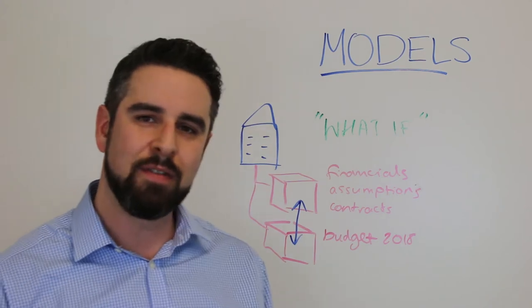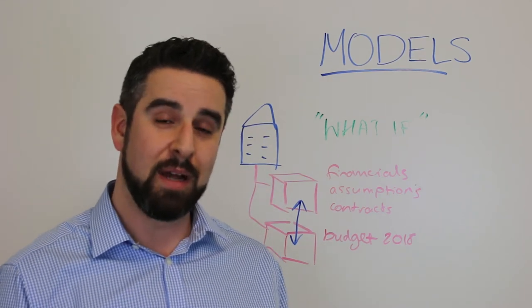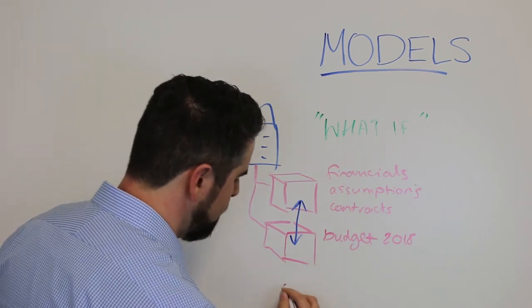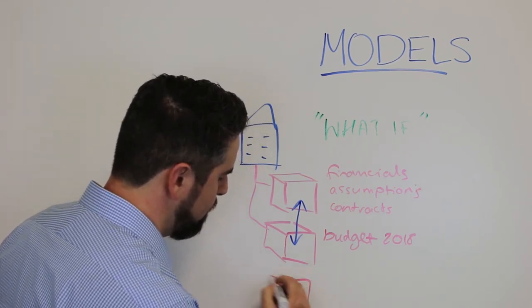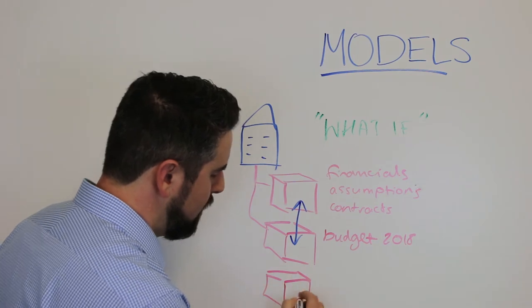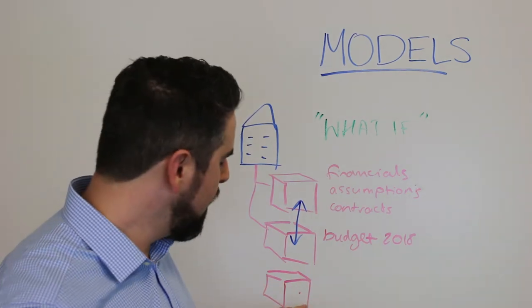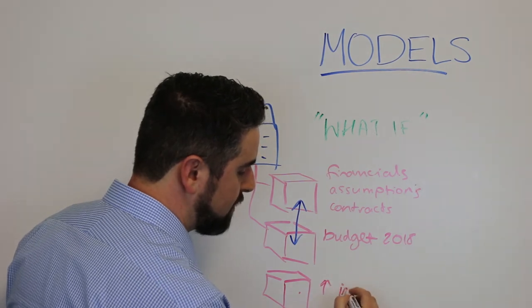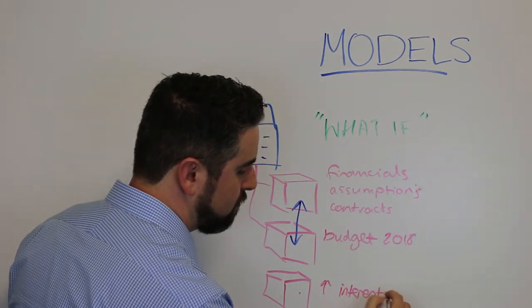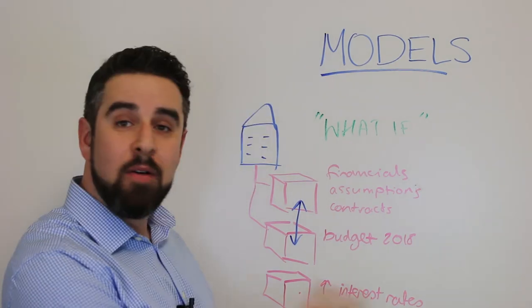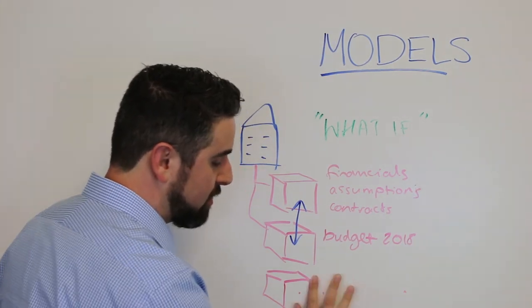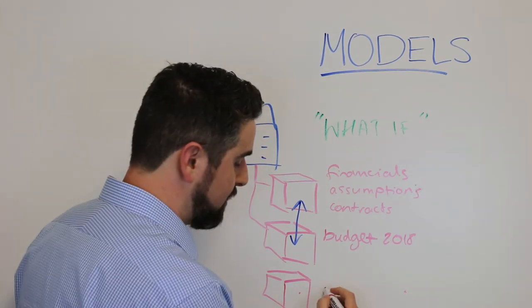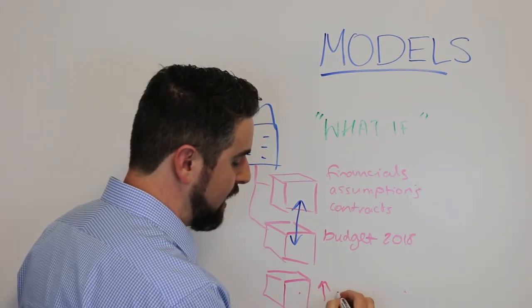The way to do that is to build out a lot of different models and each of those models can have different nuanced information about that particular asset. So I might build another model over here and in this model I might increase interest rates. Or I build another model and rather than changing interest rates I increase cap rates let's say for the valuation of that asset.